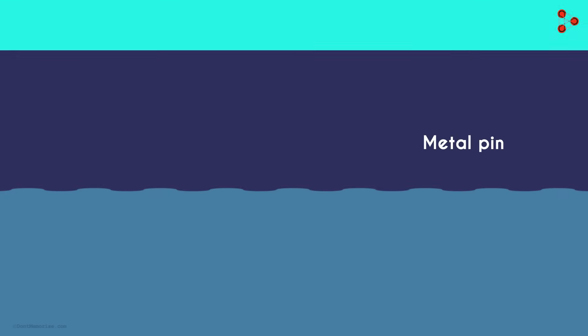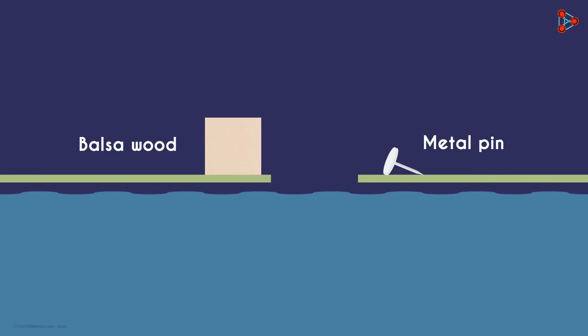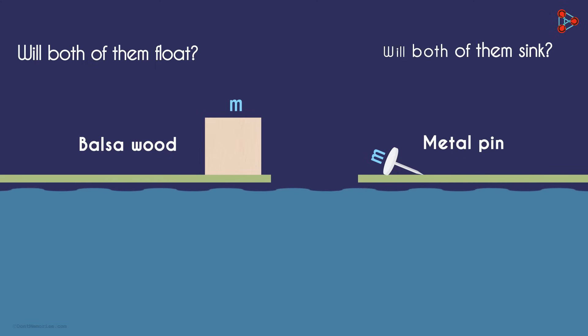Now let's say you simultaneously drop a piece of balsa wood and a metal drawing pin of the same mass into a container filled with water. What do you think will happen? Will both of them float? Or will they both sink? Or one stays afloat and one sinks? We will understand this example in the next video.